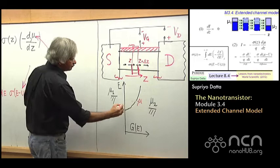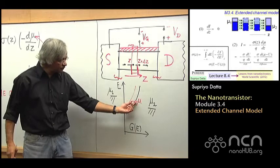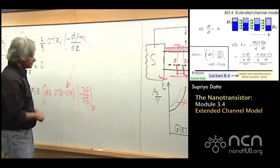If you had a positive U, this thing would rise up. If you had a negative U, it would go lower. So U moves this up and down, while mu gives you a feeling for roughly where it is filled.